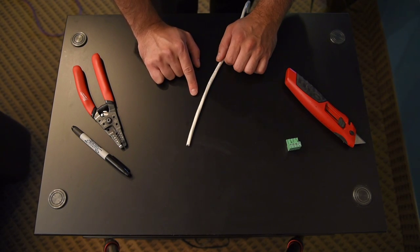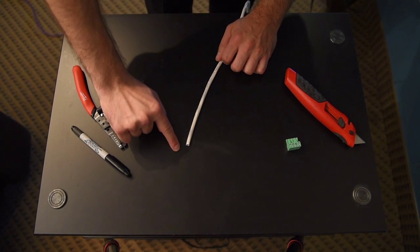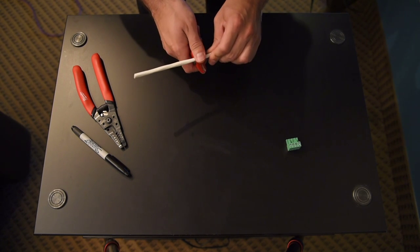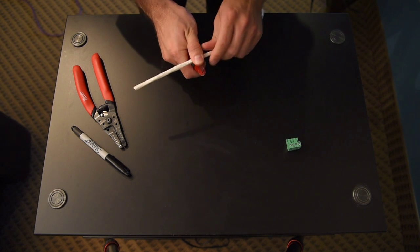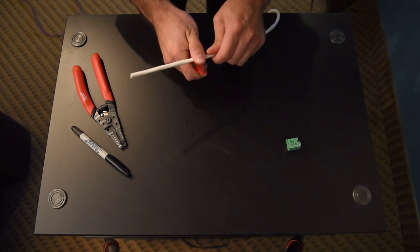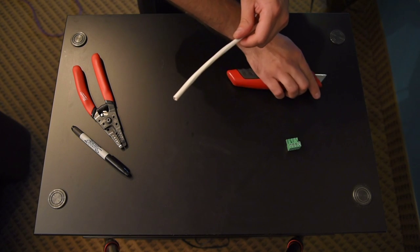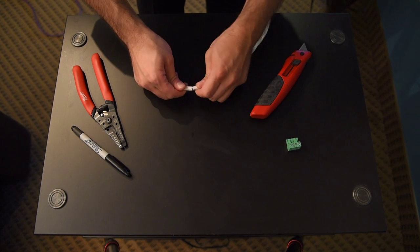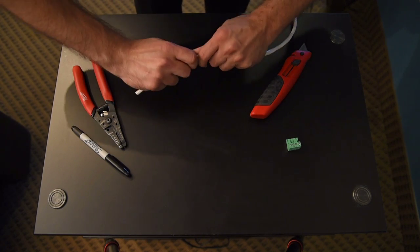So first what we're going to do is we're going to go ahead and strip off this outside jacket of this cable. So using a razor knife, carefully just cut the outside strip. You can see just the outside of the cable is cut now. I just pull this off.